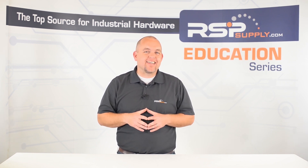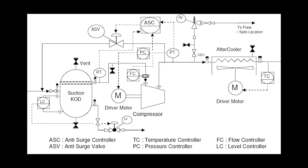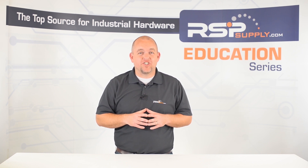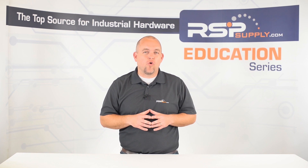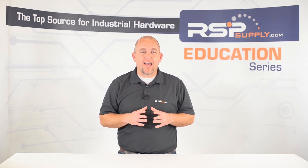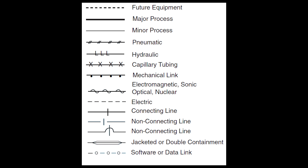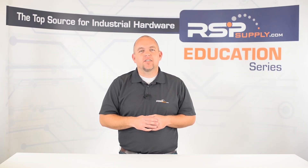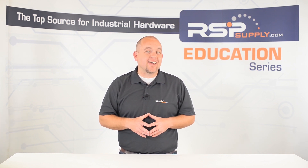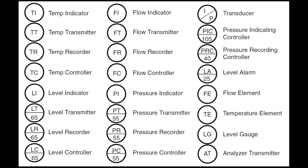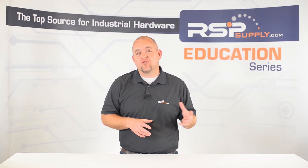P&ID stands for Piping and Instrumentation Diagram. Its intended purpose is to provide information about the piping and material in those pipes. It also references devices and instrumentation that interface with the piping and is intended to control, monitor, move, or store whatever is in the pipe, whether it is a gas or liquid. Within the diagram, it will provide detailed information about the actual pipe that is required, what types of instrumentation need to be used, and more importantly, where in the process they need to be located. Some examples of devices and instruments commonly found in a P&ID drawing include things like valves, pumps, flow measuring devices, pressure sensors, collection devices like tanks, and many other types of process equipment.